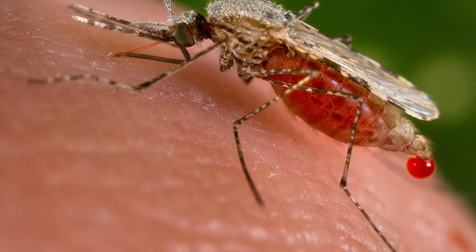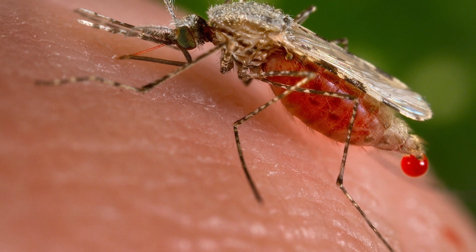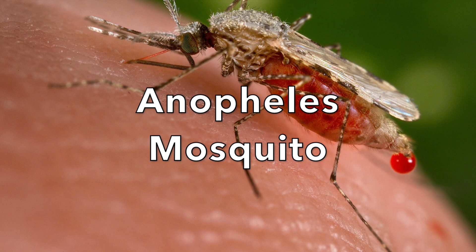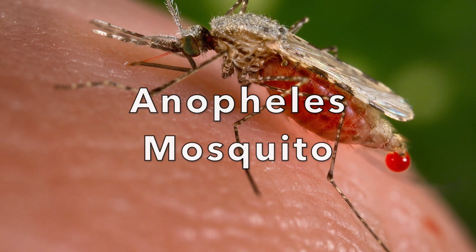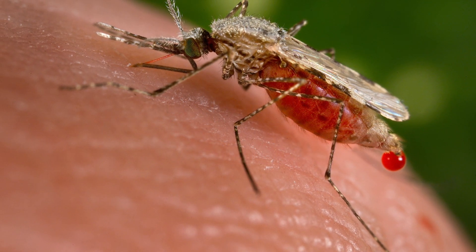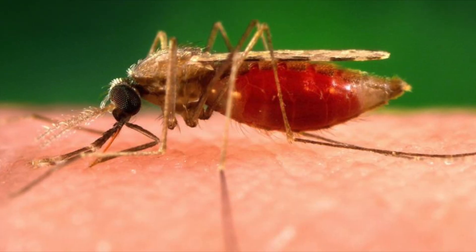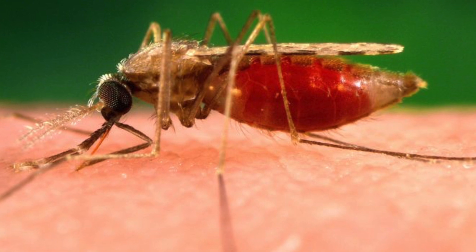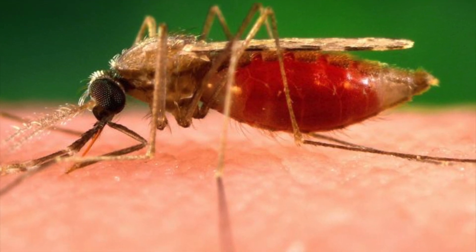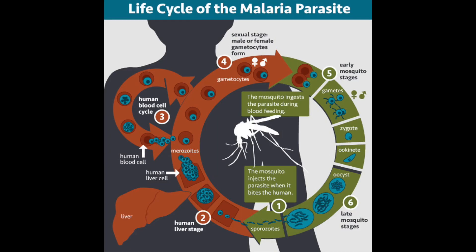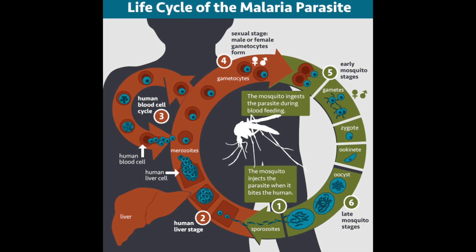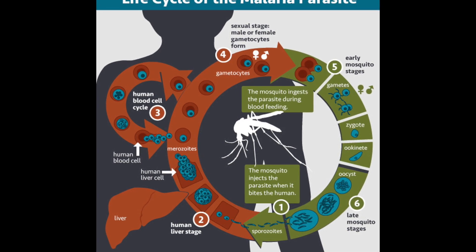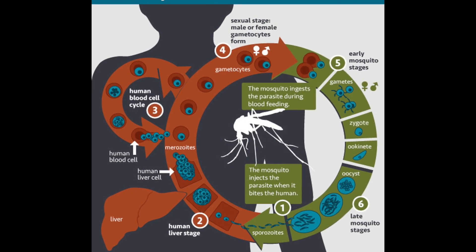Malaria is caused by protists that are able to reproduce sexually in the Anopheles mosquito, which is the vector in this case. The female mosquito needs two meals of human blood before she can lay her eggs, and this is when the protists are passed into the human bloodstream. The protists then travel around the human body in the circulatory system where they reproduce asexually, affecting the liver and damaging red blood cells.